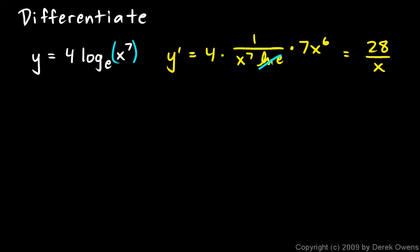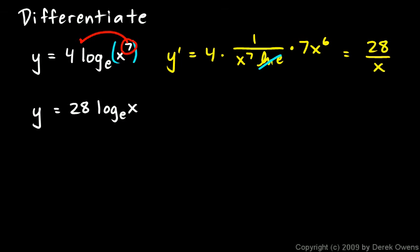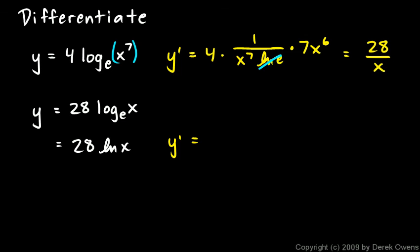Sometimes problems like this can be made easier if you rewrite using properties of logarithms. Remember that an exponent inside a logarithm can pop out front as a multiplier. So the original function y equals 4 · log base e of x^7 can be rewritten as y equals 28 · log base e of x, which is just 28 · ln(x). Taking the derivative, y' equals 28 times 1 over x. This method is a bit easier and shows how logarithms are useful for turning exponents into multiplication.